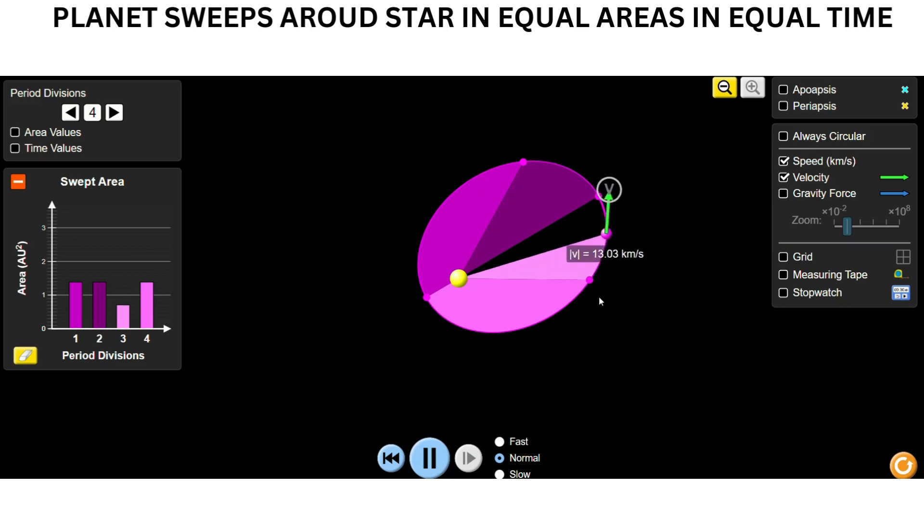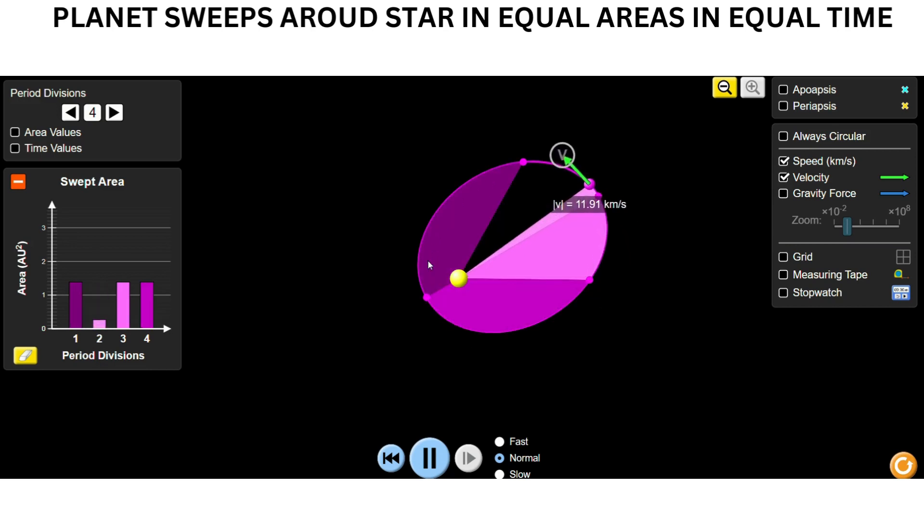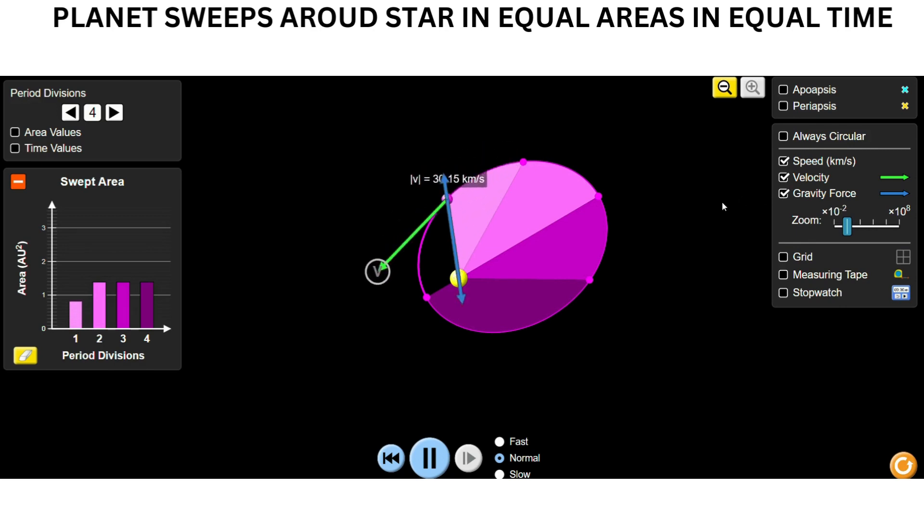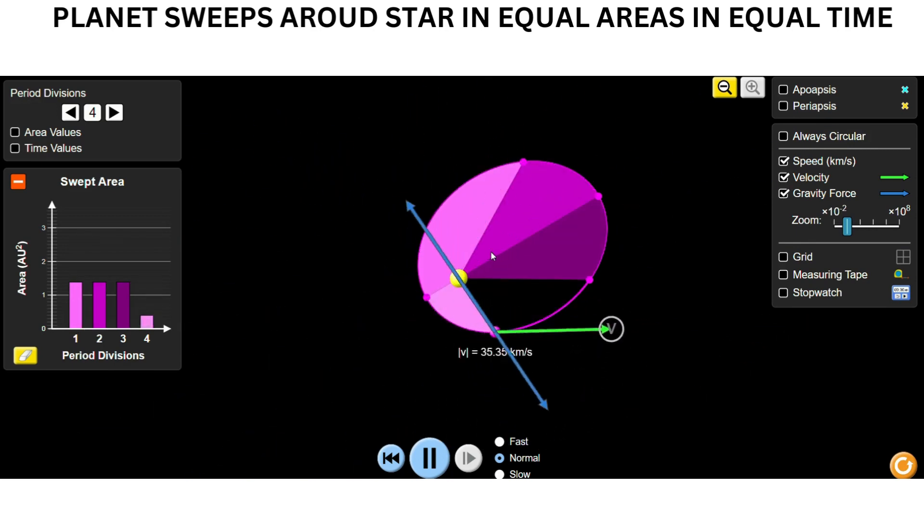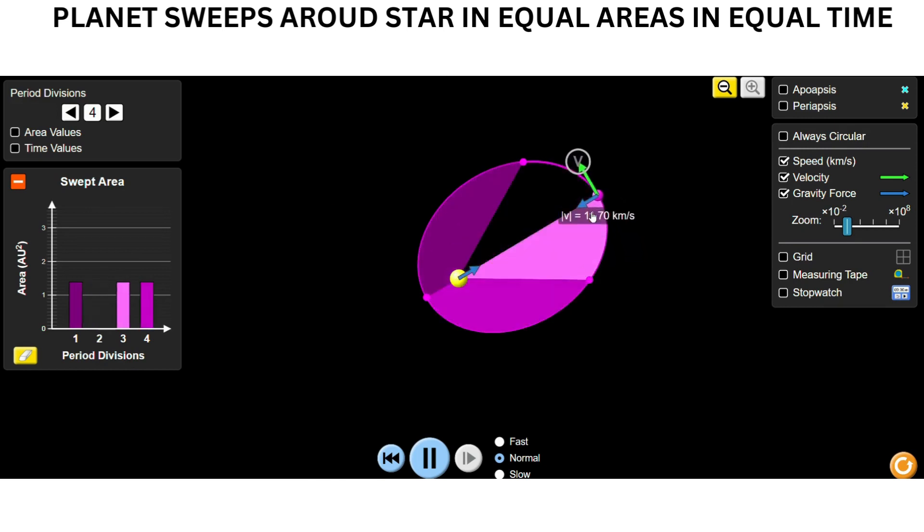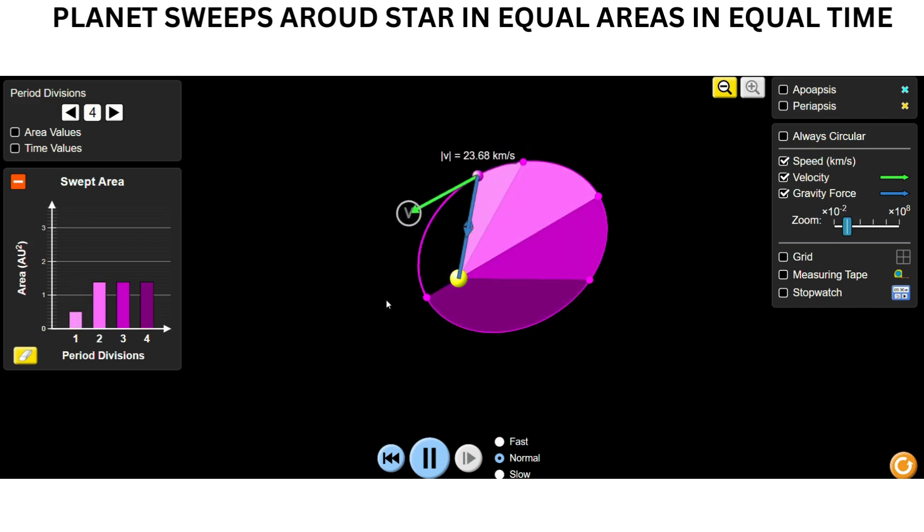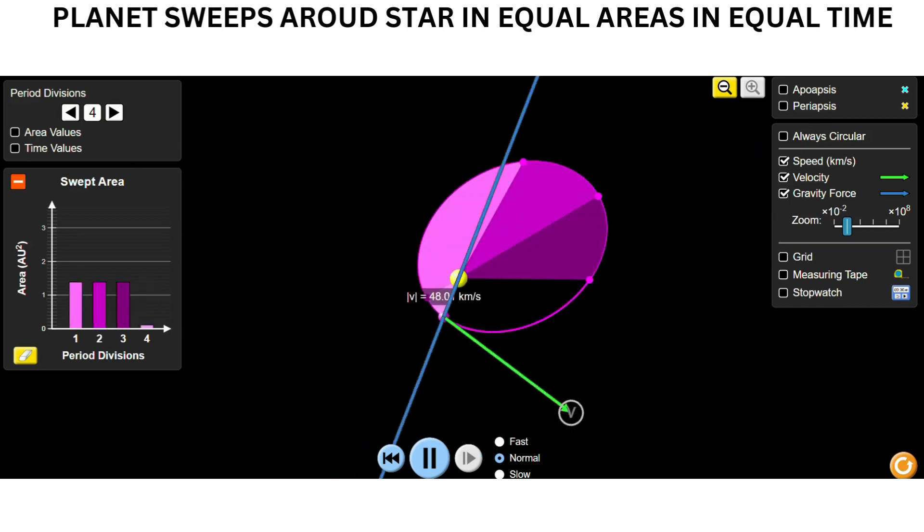Next, I will show you the gravitational force. You can see the blue arrow representing gravitational force. When the planet moves away, it is smaller, and as the planet goes towards the star, the gravitational force increases.